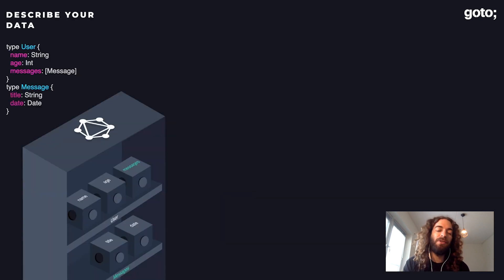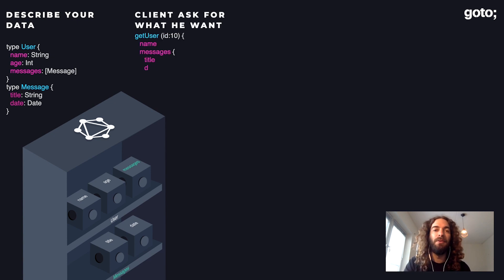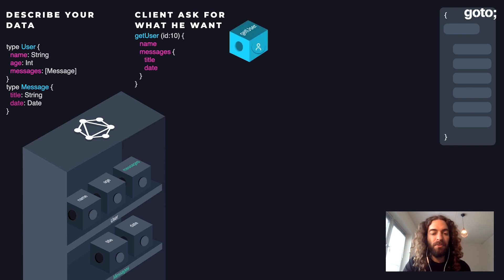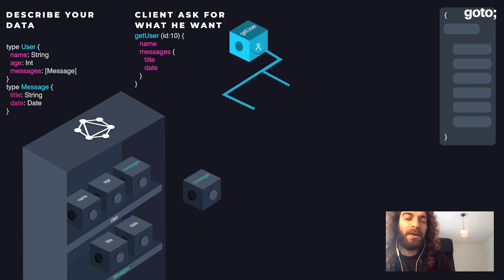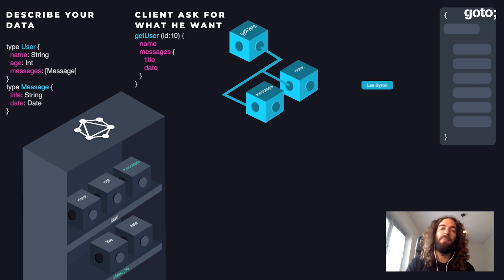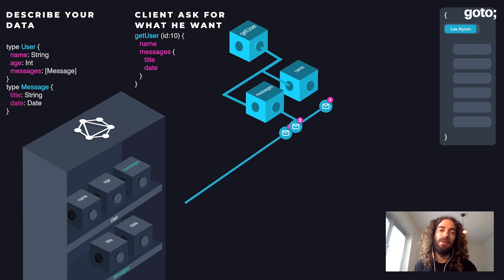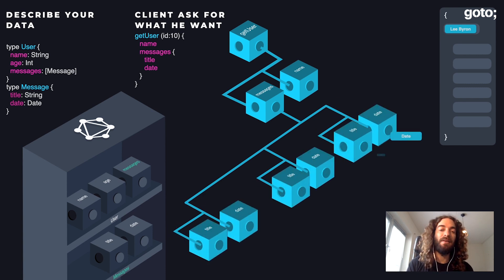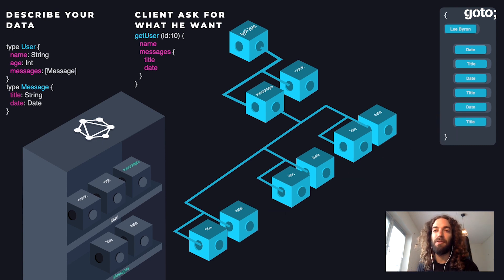What the GraphQL engine does automatically is: when it gets a query, it takes the first resolver, runs it, and based on that result and the query, it brings the other execution steps it needs and executes them in parallel. Then it takes the results and puts them back in the right place. For messages, for example, if we get an array of three messages, the execution engine will automatically for each message run the date and the title — whatever we asked for in the query — and we get the full result.